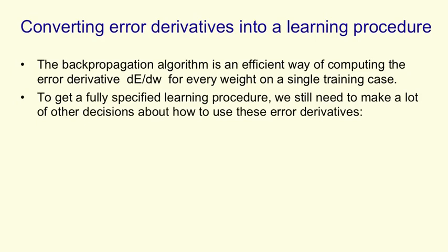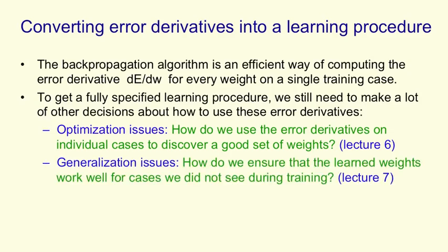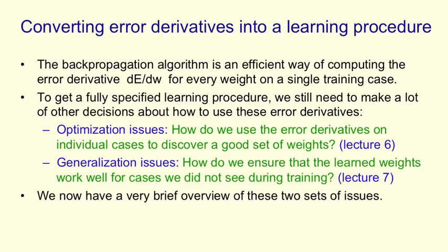We need to make lots of other decisions. Some of these decisions are about how we're going to optimize, that is, how we're going to use the error derivatives on the individual cases to discover a good set of weights. Those will be described in detail in Lecture 6. Another set of issues is how do we ensure that the weights that we've learned will generalize well. That is, how do we make sure they work on cases that we didn't see during training? And Lecture 7 will be devoted to that issue. What I'm going to do now is give you a very brief overview of these two sets of issues.